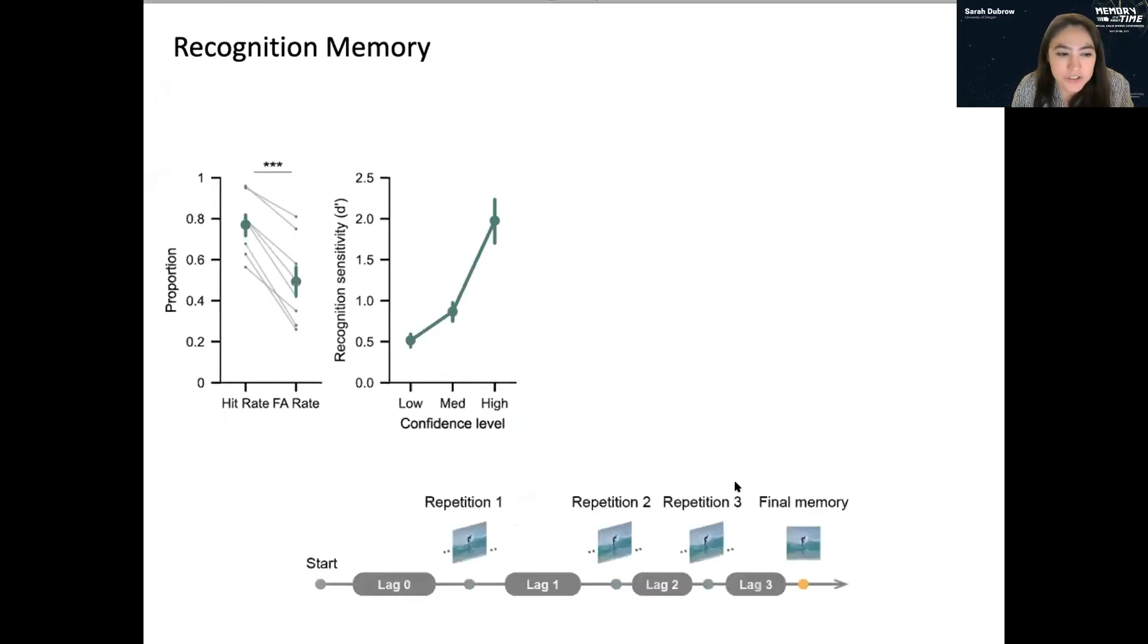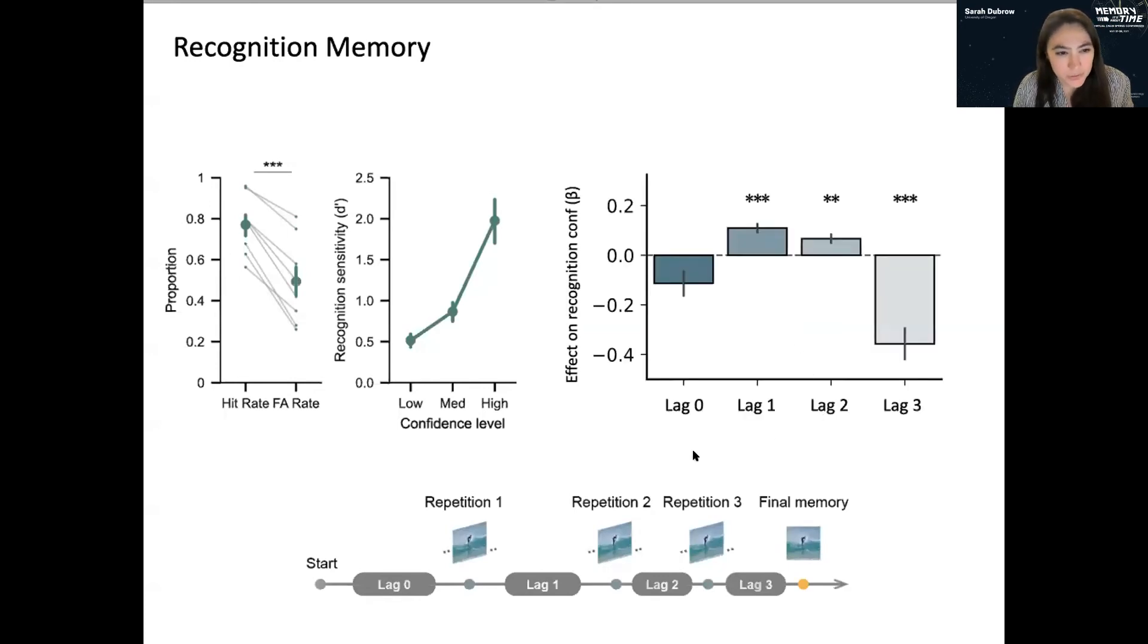And what I want to show you is the effect of lag on recognition. And I'll just show you the data first and walk you through what the lags refer to, what they mean. So here we have the four different lags. Lag zero is just how long in the experiment is the first time that you saw it, how far into the experiment. So there's no significant effect of lag zero here. But if this had come out, that's basically saying that the longer lag zero is the worse your recognition memory is. So there's kind of like a primacy effect.